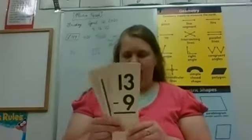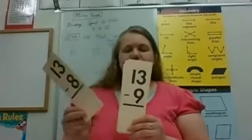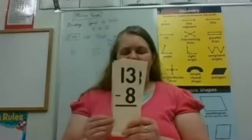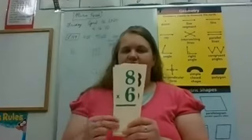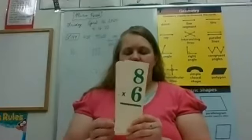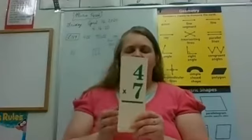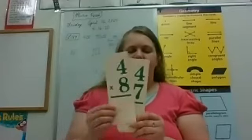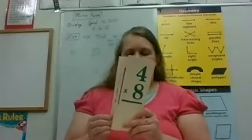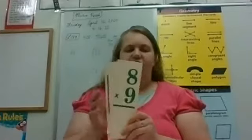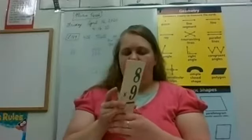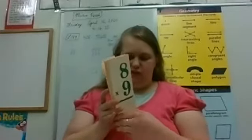Making sure — 13 minus 8 is 5. Okay, switch your brains again. 8 times 6 is 48. 4 times 7 is 28. 4 times 8 is 32. 8 times 9 is 72. Switch your brains one more time.